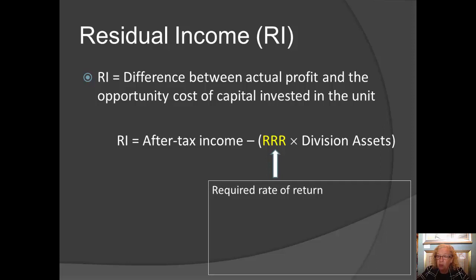Choosing the required rate of return is a tricky issue. Some firms use what's called a hurdle rate — it's called a hurdle rate because divisions or projects have to jump that hurdle. It's a rate chosen to meet the expectations of the board of directors and the shareholders.